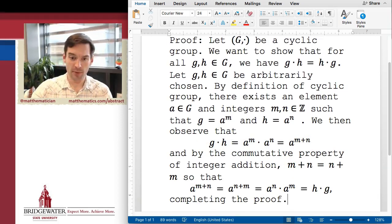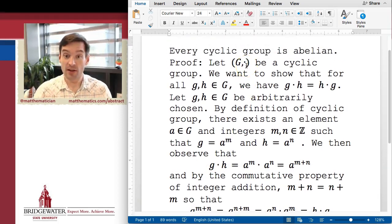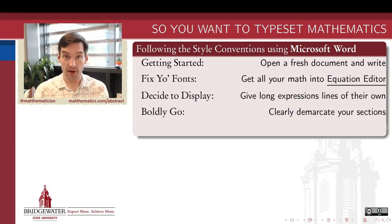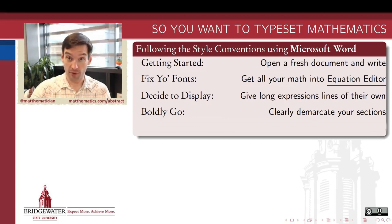So style convention number three now is about sectioning. So I want to look back through my argument and clearly demarcate what are the sections. In this particular example, I just stated a result that I wanted to prove and then I supplied the proof. So those are kind of my two big sections in this. So let's go back and add those in.